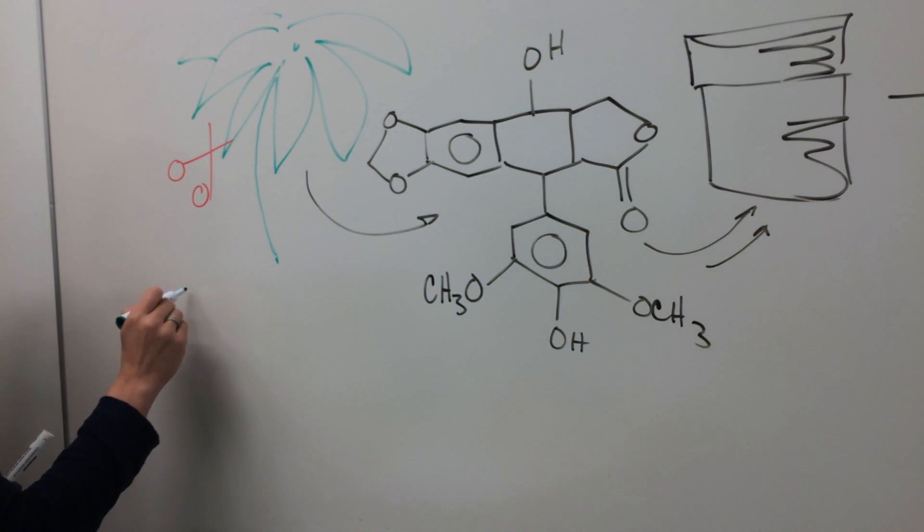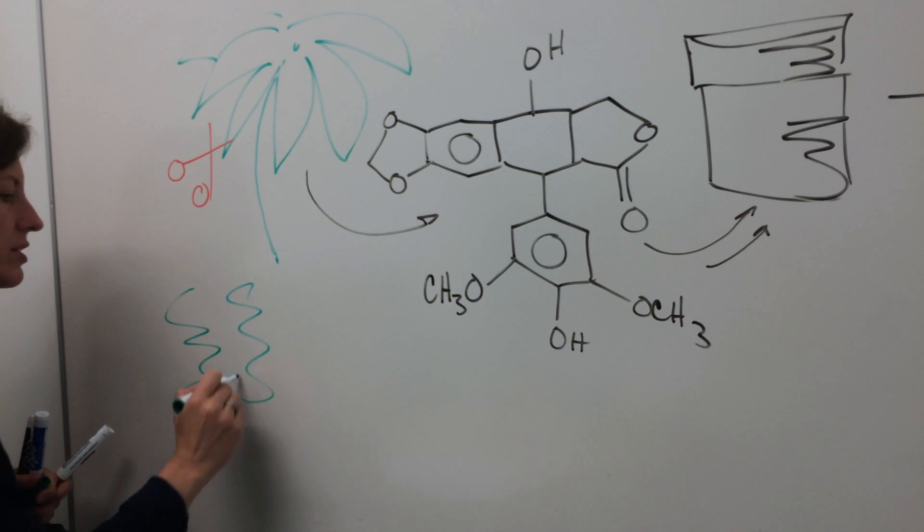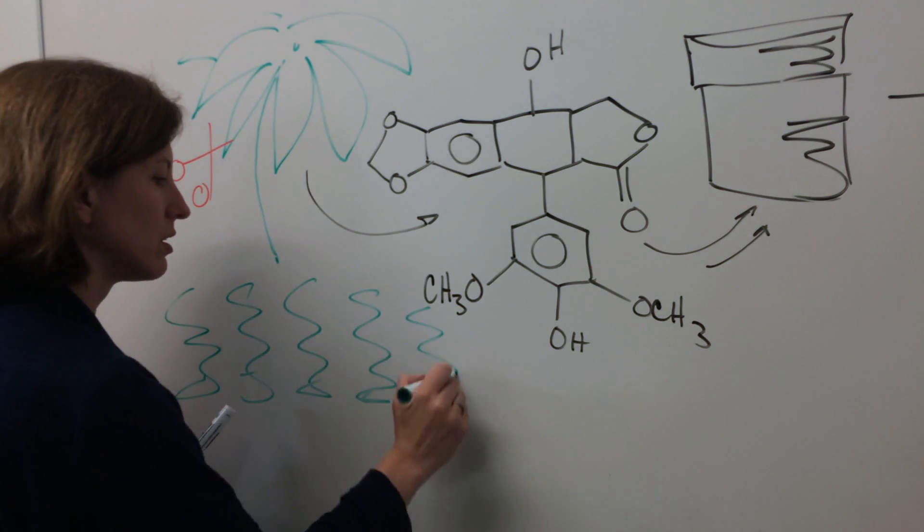What we really need are the genes that encode the enzymes because they're really the instructions for telling us how this molecule can be made in a cell.